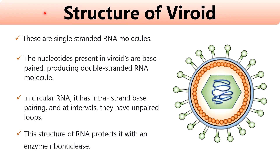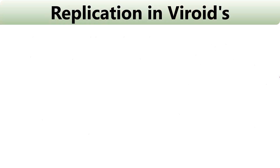Viroids are made up of single-stranded RNA molecules. The nucleotides present in viroids are base-paired, producing double-stranded RNA molecules. In circular RNA, it has intra-strand base pairing and at intervals they have unpaired loops. This structure of RNA protects it from the enzyme ribonuclease.